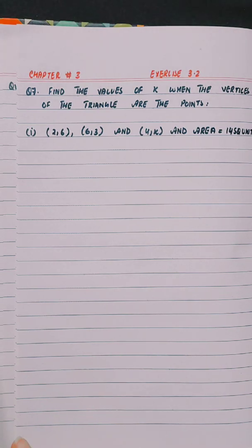Find the value of k when the vertices of the triangle are the points (2,6), (6,3), and (4,k), and area is 14 square units.